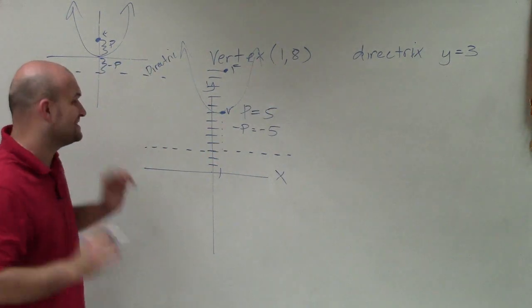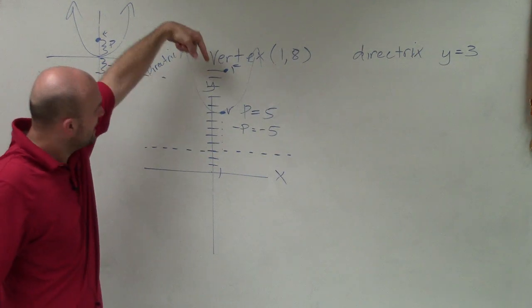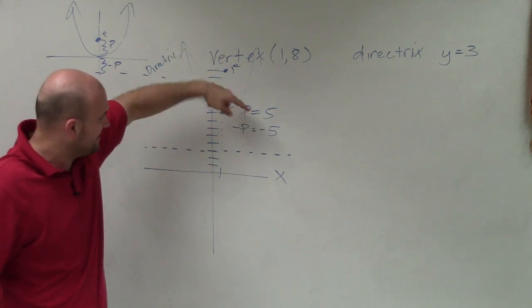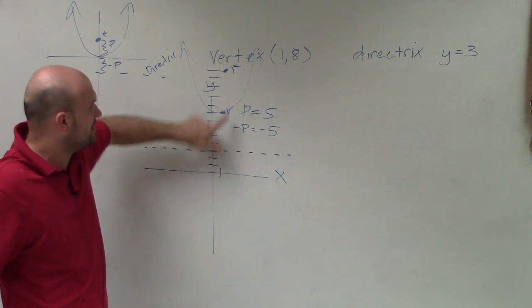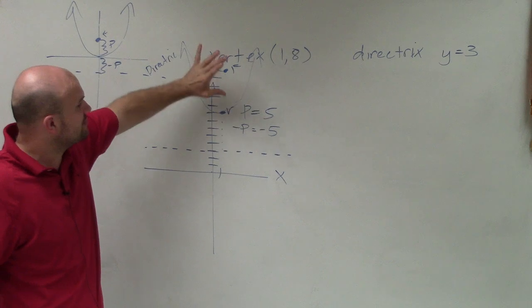Because remember, p represents the distance from the vertex to the focus. I had to go down, which is negative, to go to my directrix. So I need to go up to find my focus, which would be a positive p.